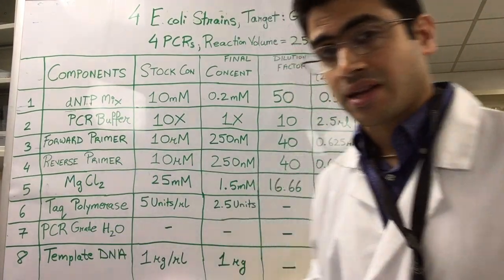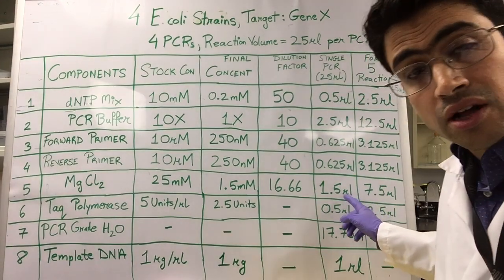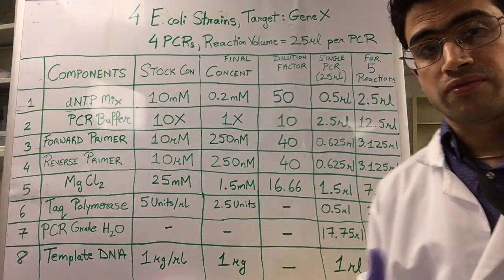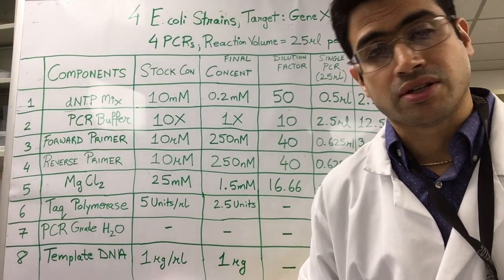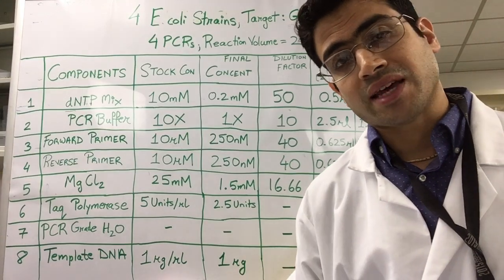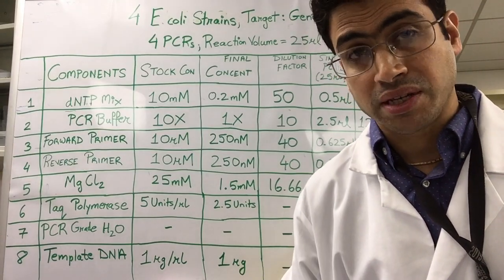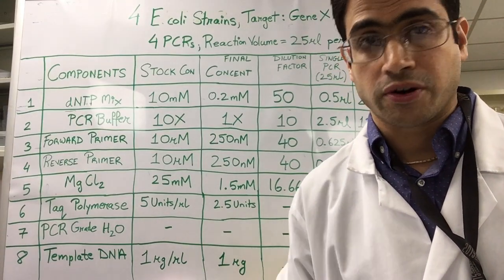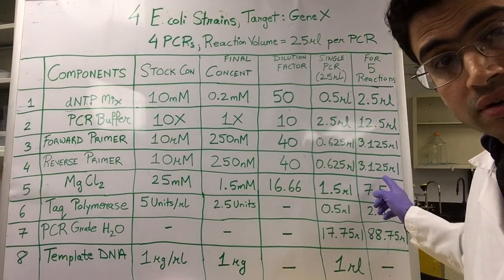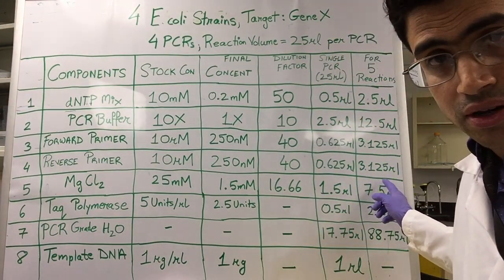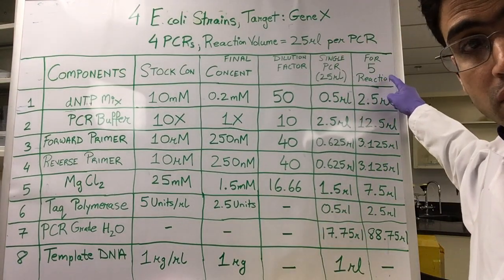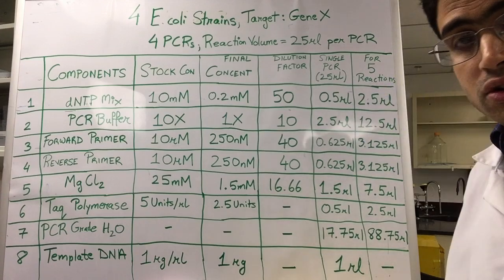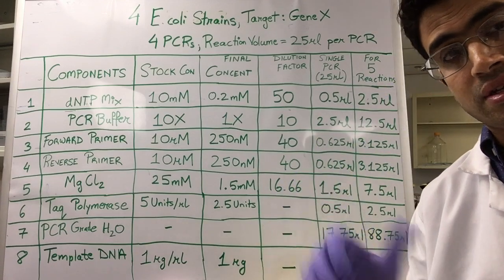The way you do that calculation, this column over here shows you the volumes for a single PCR tube. You multiply that by the total number of PCRs that you're conducting, which is four. You will notice, and that's this column over here, the last column.